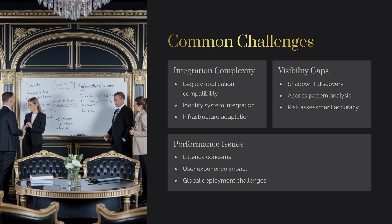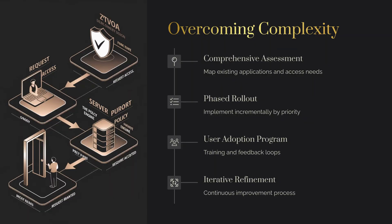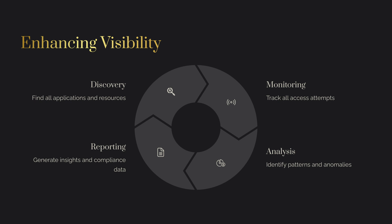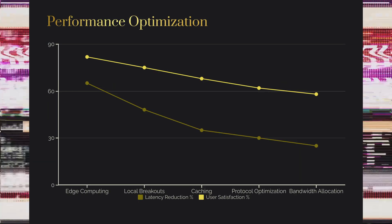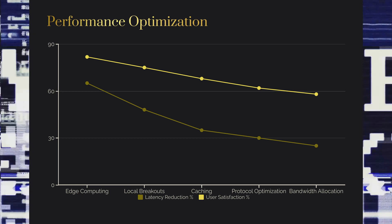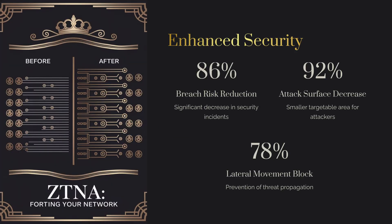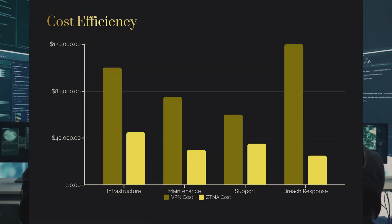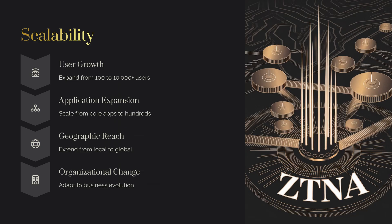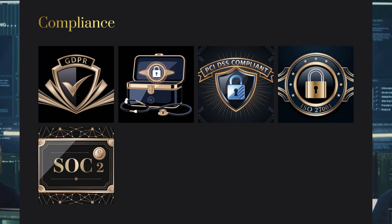Secondly, ZTNA offers enhanced security through continuous verification. VPNs typically only authenticate users upon initial connection, whereas ZTNA continuously monitors and validates user and device posture, ensuring that access is revoked if security conditions change. Finally, ZTNA is more adaptable to cloud and hybrid environments — VPNs can struggle in these settings, while ZTNA is designed to operate effectively in complex, distributed environments, making it a better fit for modern business needs.